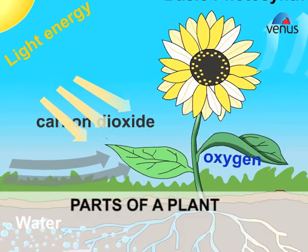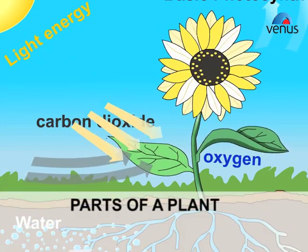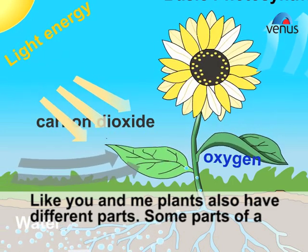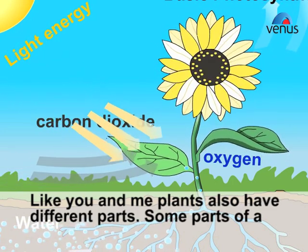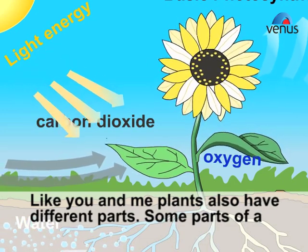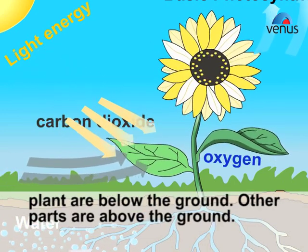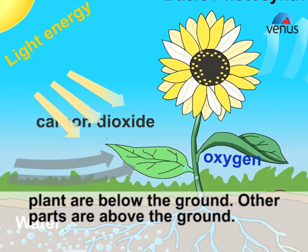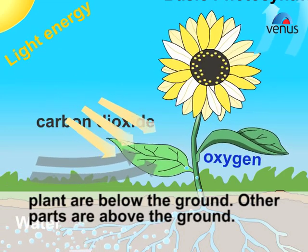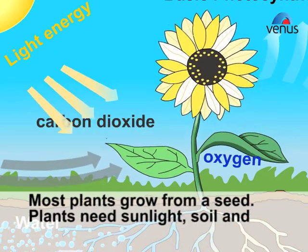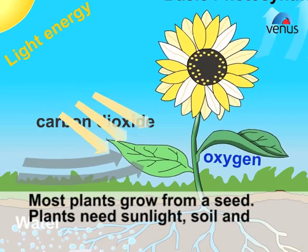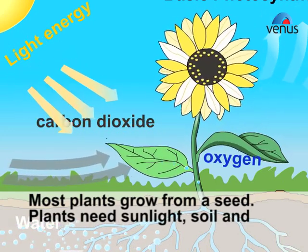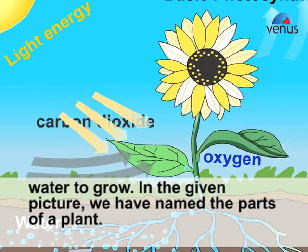Like you and me, plants also have different parts. Some parts of a plant are below the ground, and other parts are above the ground. Most plants grow from a seed. Plants need sunlight, soil, and water to grow.